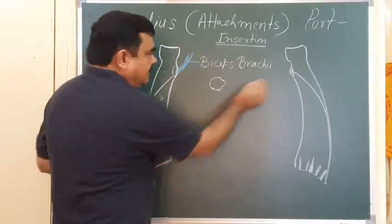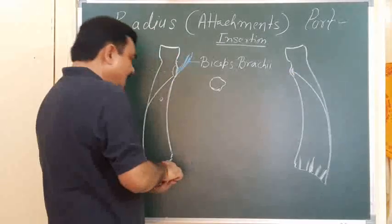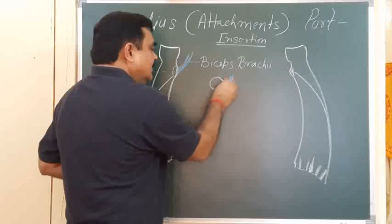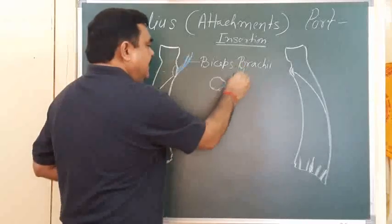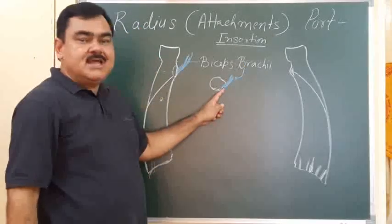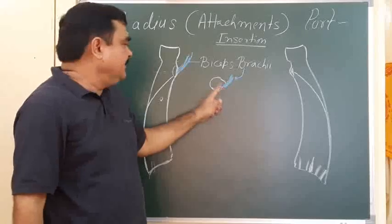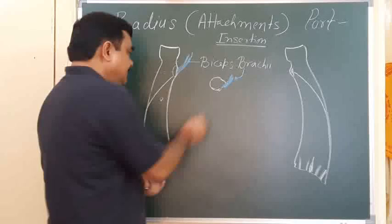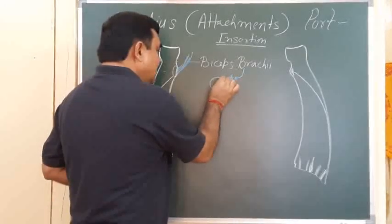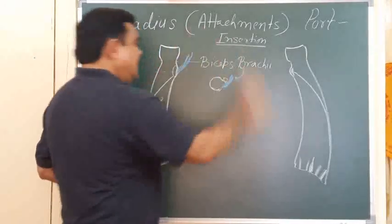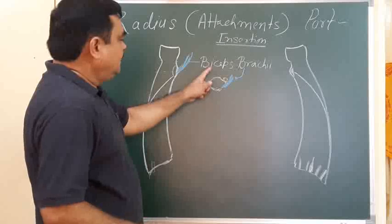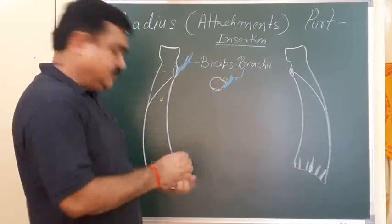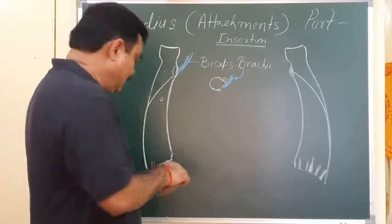The posterior part of the radial tuberosity is rough — this is where biceps brachii inserts. Anteriorly, the smooth part has a bursa. So this is the insertion of biceps brachii on the posterior part of the radial tuberosity.